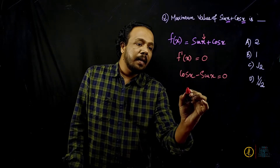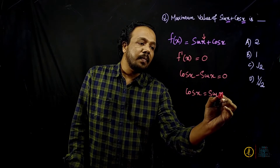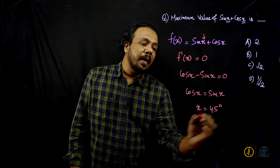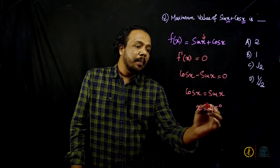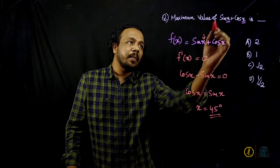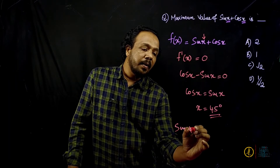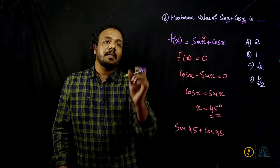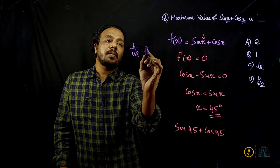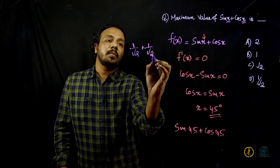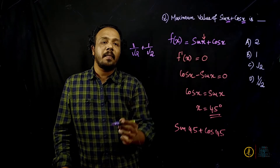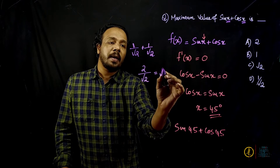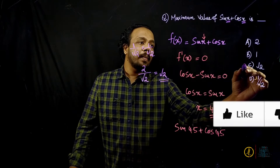We set cos x equal to sin x. The value of x where cos x and sin x are equal is 45 degrees. So x is 45 degrees. Then sin 45 plus cos 45: sin 45 is 1 by root 2, cos 45 is 1 by root 2. So 1/√2 plus 1/√2 equals 2/√2, which equals root 2. The answer is root 2, option C.